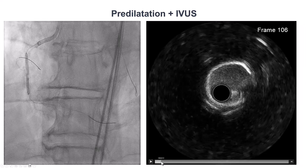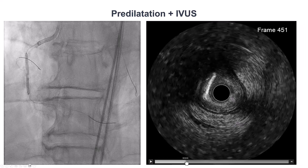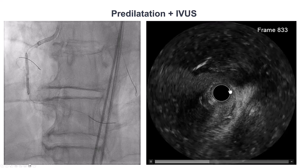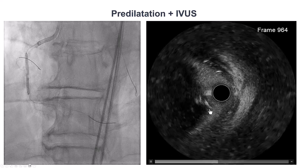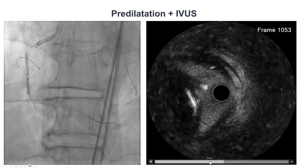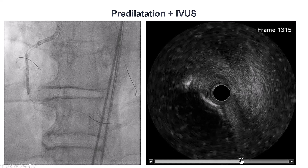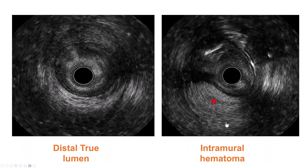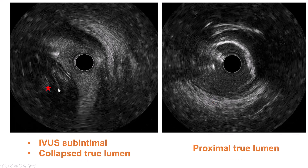The intravascular ultrasound is quite interesting: we have some subintimal entry of the vessel, some calcium, and an extraplural position — we can see we are outside the vessel architecture with an oval shape. The still frames distally show the true lumen. There is an intramural hematoma, likely from use of the knuckle wire. The true lumen is collapsed distally, but proximally we are, as expected, in the true lumen.